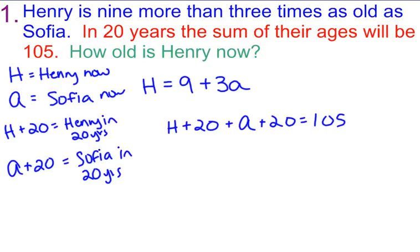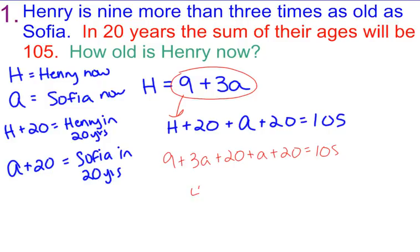So now what I would do from here is I would use substitution. I have 9 plus 3A plus 20 plus A plus 20 equals 105. I'm going to combine like terms. I've got a lot going on here. 3A plus A is 4A. 20 plus 20 is 40 plus 9. So I have 4A plus 49 equals 105.